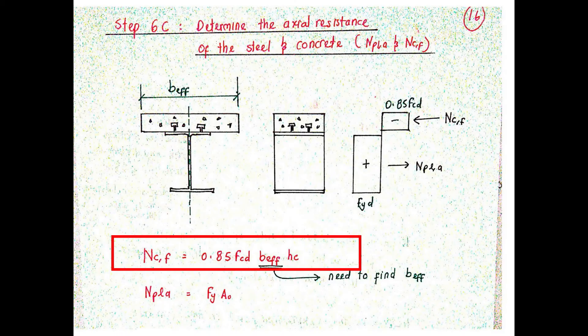To determine the degree of shear connection present in the beam, the axial resistance of the steel and concrete are required. Let's determine the value of NCF. NCF is the compression force in the concrete flange at full shear connection, which can be calculated using a stress block diagram. NCF can be calculated by multiplying 0.85, FCD with effective width, and height of concrete slab, as highlighted in the red box.